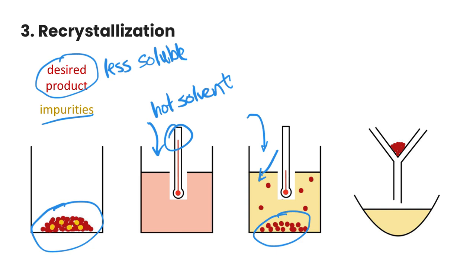Once we've done that, we can filter and collect our products. This is our desired product here, and then this is all the impurities in our sample here. So nice way to get some of those impurities out of a sample.